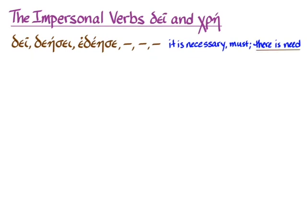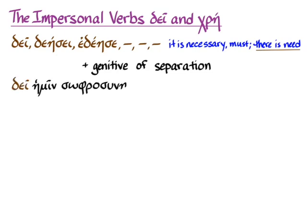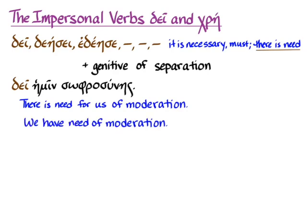That same idea is at work with δεῖ when you see it with a genitive of separation. Because there's something lacking, you need it, and that's why what you need is in the genitive case — because you're separated from it. For instance: δεῖ ἡμῖν σωφροσύνης — 'there is need for us,' with a dative of advantage, of σωφροσύνη in the genitive, meaning 'prudence' or 'moderation.' You'll also see this genitive of separation in πολλοῦ δεῖ and similar expressions, meaning 'much is missing' or 'much is lacking.'